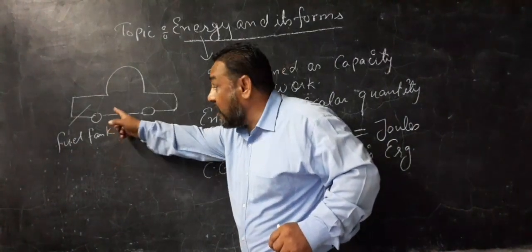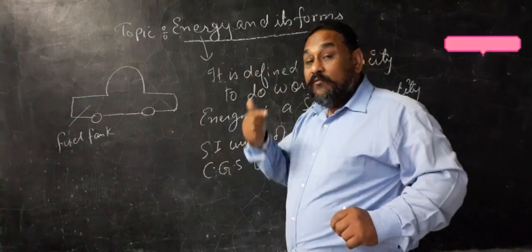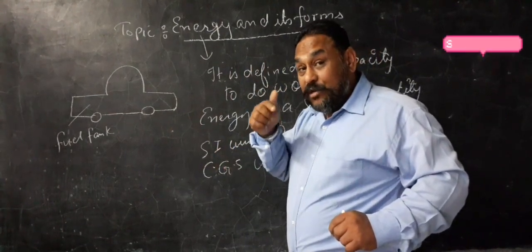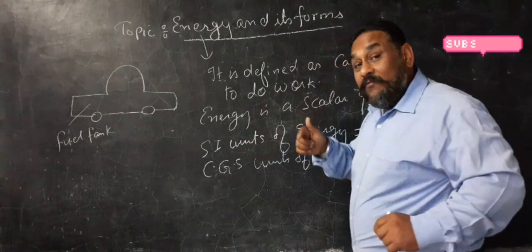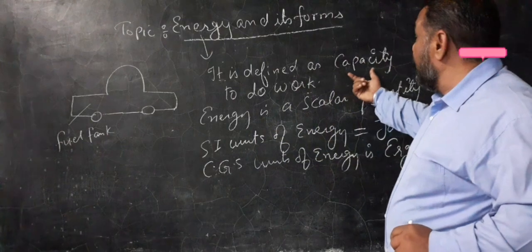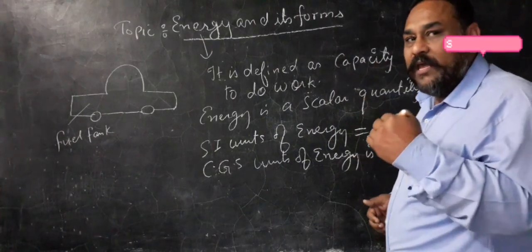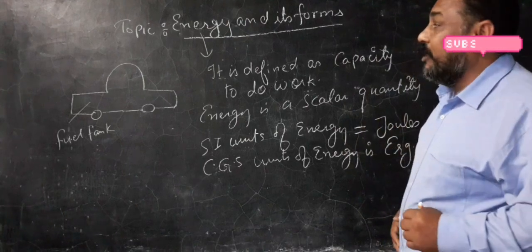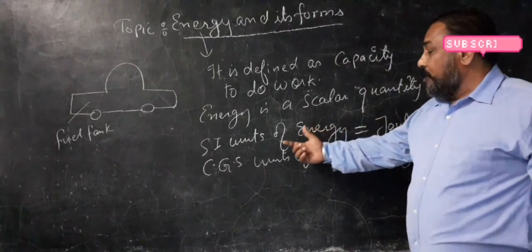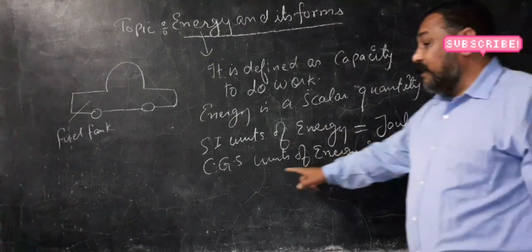That means if there is a source of energy, then only work is done. So work and energy are very closely related terms. Capacity to do work - that means petrol in the car makes the capacity of the car to do work. And in human beings, whatever we eat, whatever we drink, makes us capable to do work because energy is playing a very important role in our life.